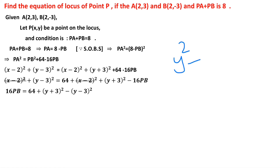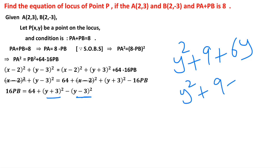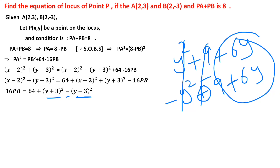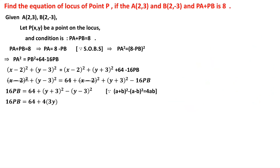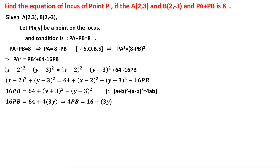Expanding: (y + 3)² = y² + 9 + 6y and (y - 3)² = y² + 9 - 6y. Using the identity (a + b)² - (a - b)² = 4ab, we get 16·PB = 64 + 4·(y)(3) = 64 + 12y.